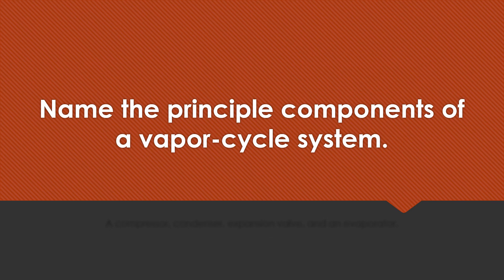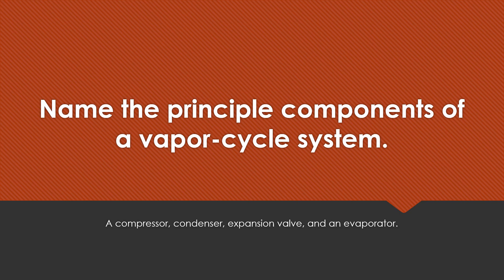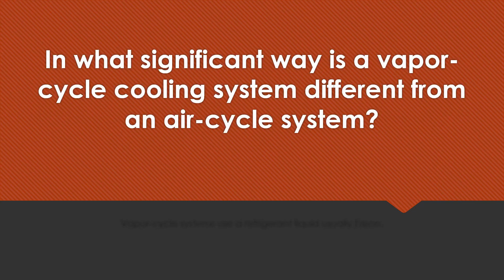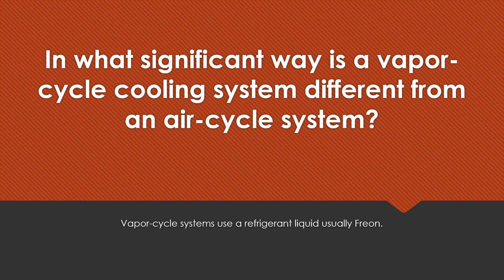Name the principal components of a vapor cycle system. A compressor, condenser, expansion valve, and evaporator. In what significant way is a vapor cycle cooling system different from an air cycle cooling system? Vapor cycle systems use a refrigerant liquid, usually Freon.